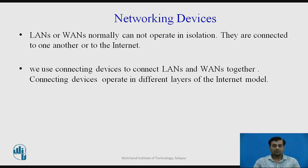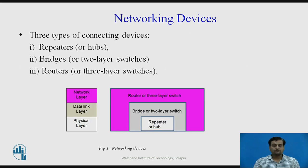This model is normally known as the OSI model. There are three types of networking or connecting devices: the first is a repeater, which works at the first layer of the OSI model; then bridges, sometimes referred to as two-layer switches; and the third type is a router, which operates at three layers.